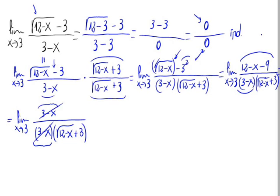That's it. And now the limit when x approaches 3 is 1 divided by what's left on the denominator, the square root of 12 minus x plus 3.